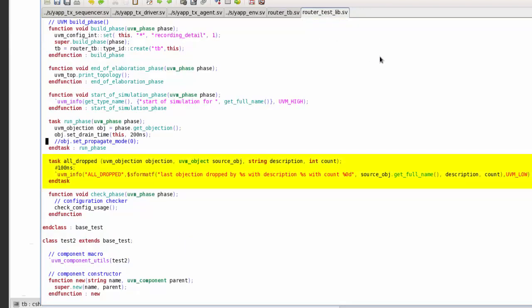The test class all_dropped also prints the task arguments, source object, description and count. If I run a simulation,